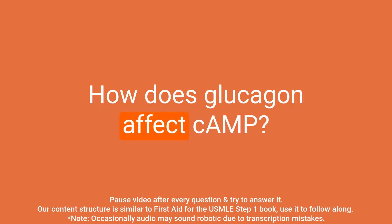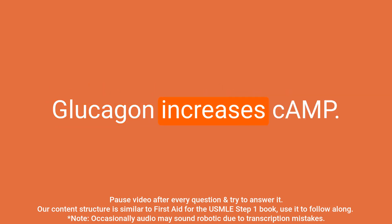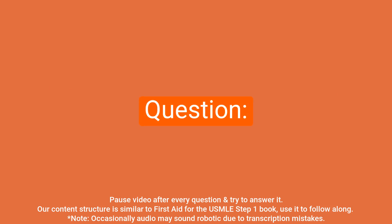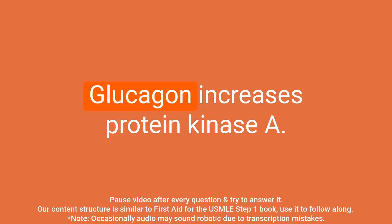Question: How does glucagon affect cAMP? Answer: Glucagon increases cAMP. Question: How does glucagon affect protein kinase A? Answer: Glucagon increases protein kinase A.